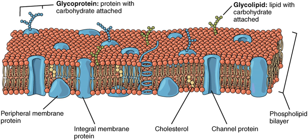In eukaryotic cells, new phospholipids are manufactured by enzymes bound to the part of the endoplasmic reticulum membrane that faces the cytosol. These enzymes, which use free fatty acids as substrates, deposit all newly made phospholipids into the cytosolic half of the bilayer. To enable the membrane as a whole to grow evenly, half of the new phospholipid molecules then have to be transferred to the opposite monolayer. This transfer is catalyzed by enzymes called flippases.